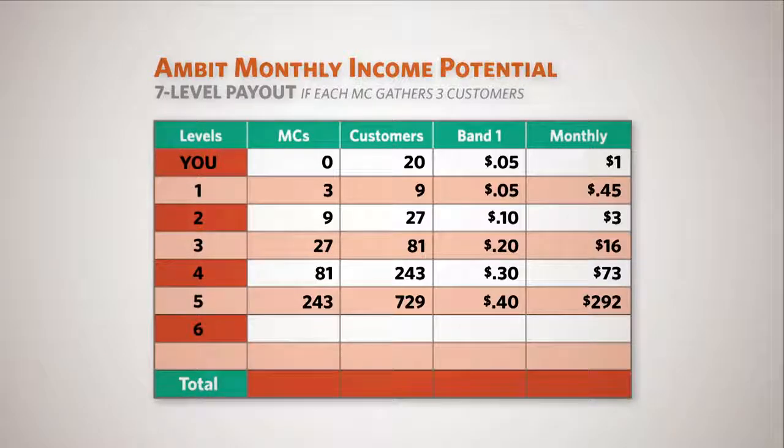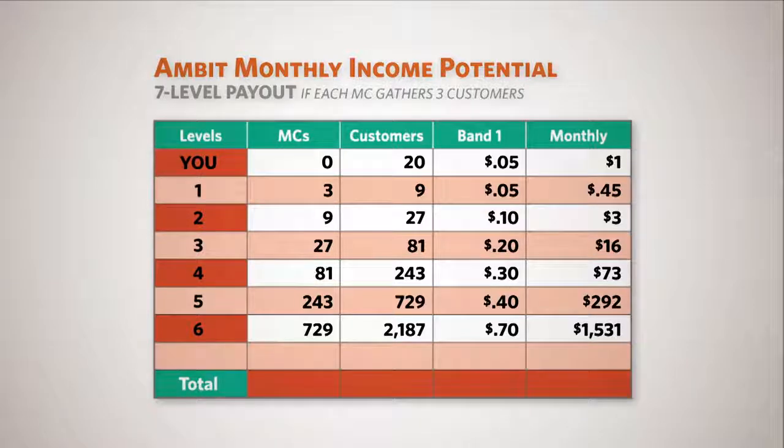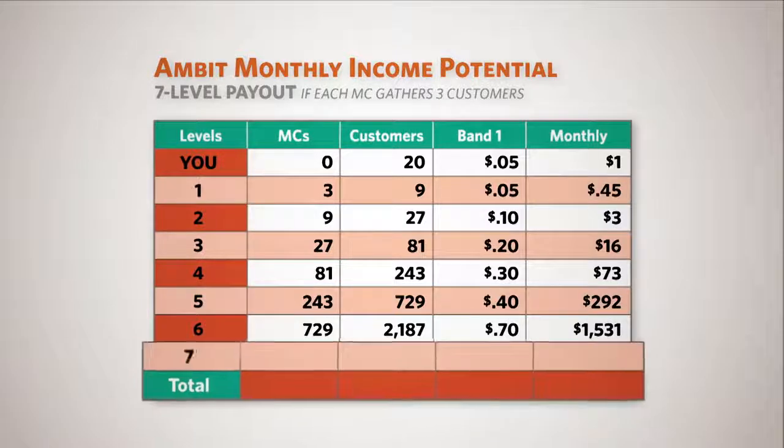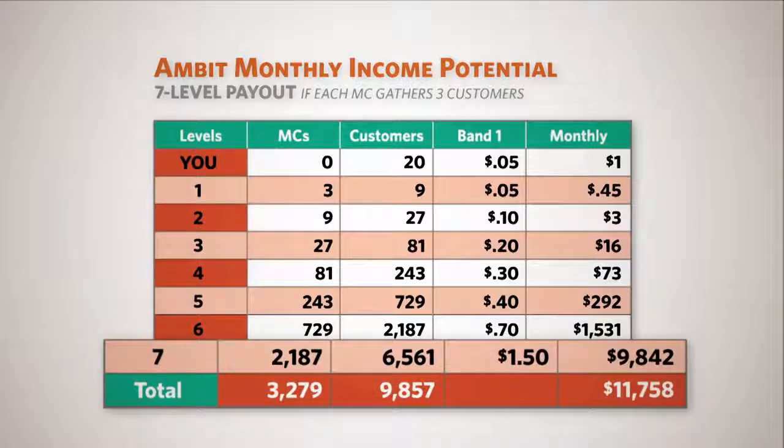If this growth continues down through your sixth level, that monthly commission jumps to nearly $2,000. But it doesn't stop there. With Ambit's powerful residual commission plan, you will also get paid down through the seventh level of your organization, which in this same scenario would bring your monthly total to more than $11,000.